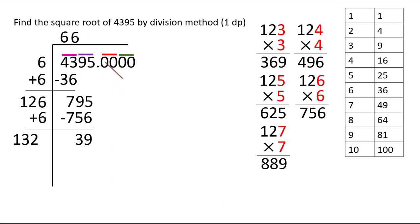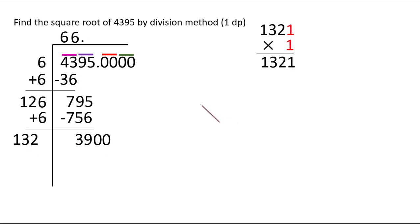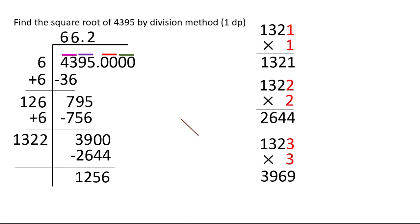Now we put the decimal point above and bring down the two zeros. We need a digit after 132 such that multiplying gives 3900 or less. 1321×1=1321; 1322×2=2644; 1323×3=3969, which is bigger. So 1322×2=2644 works. Subtracting gives 1256. Add 2 to get 1324.